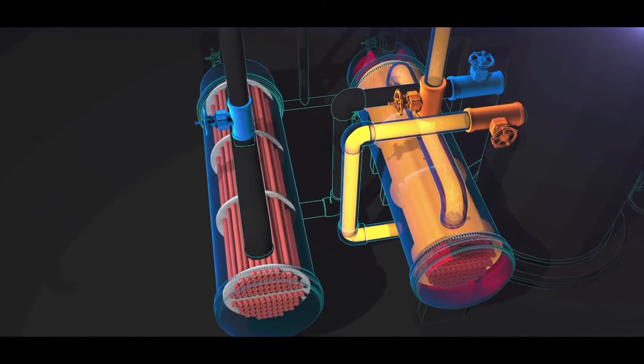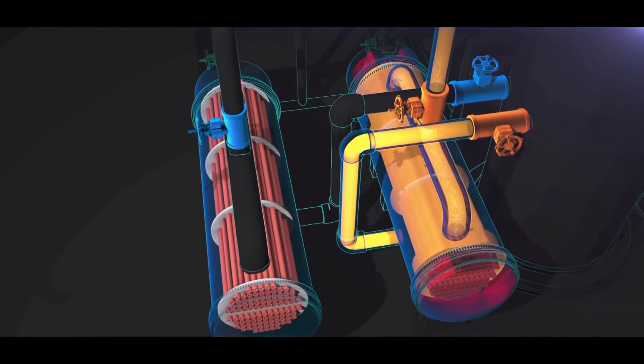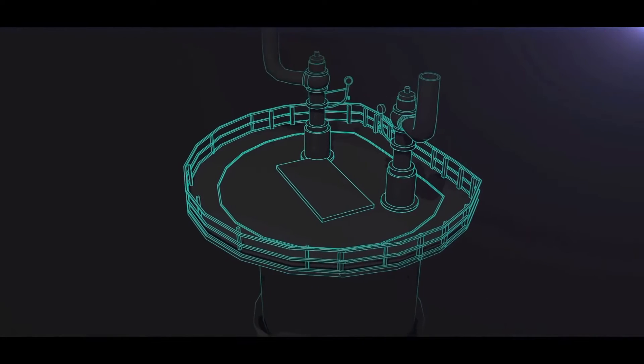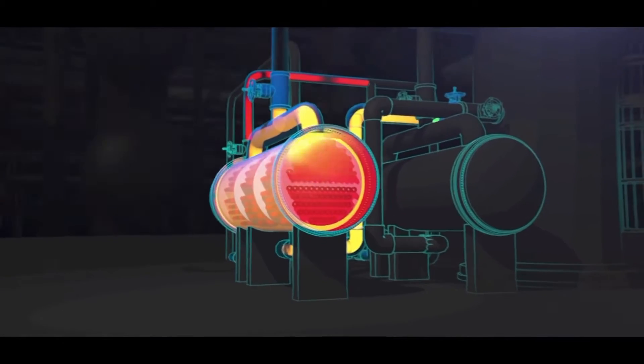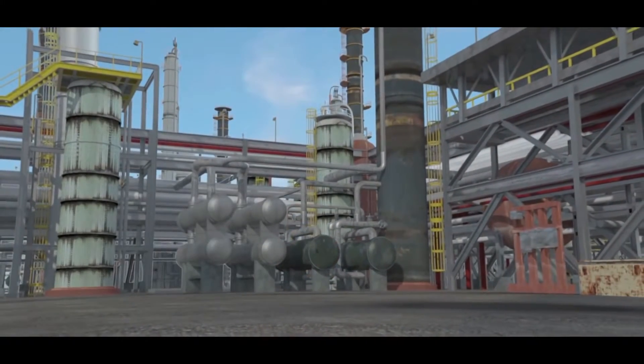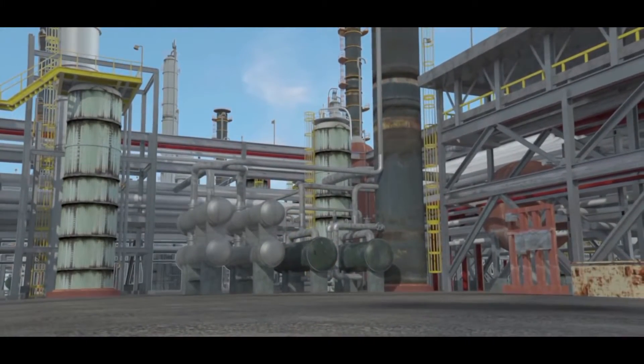In particular, the CSB found that the heat exchanger that failed was completely isolated from its pressure relief valve. When pressure inside the heat exchanger dangerously increased, there was nothing to stop a catastrophic rupture.